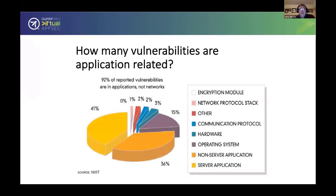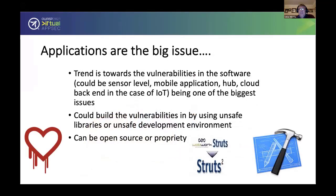That 92% of reported vulnerabilities are in applications, not networks. We've covered the network side to death — things still get through, but we have those layers of Swiss cheese already. It's the application that's the problem. The trend is always towards vulnerabilities in the software, and this is compounded because we have multiple layers of our applications — IoT networks, sensors, mobile platforms, concentrating hubs, and cloud backends.